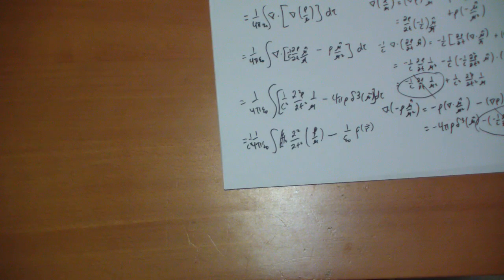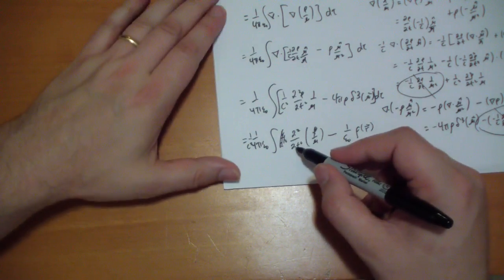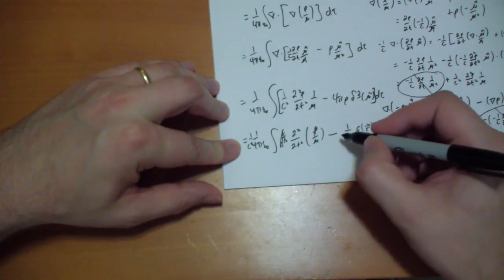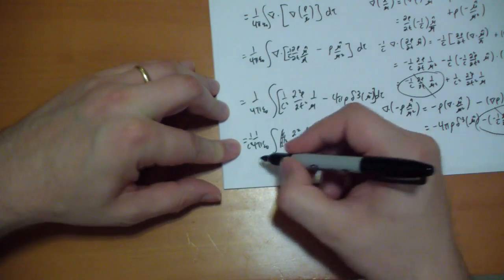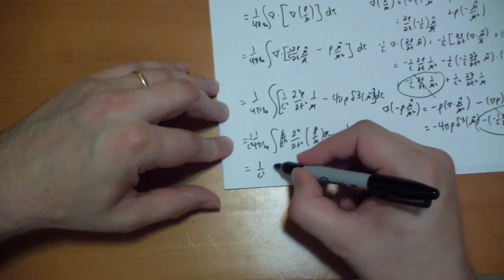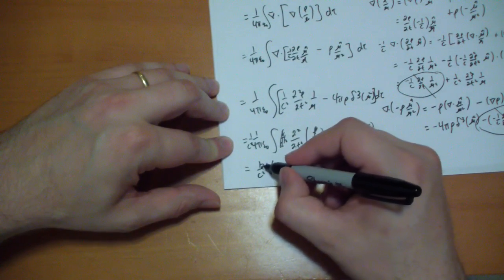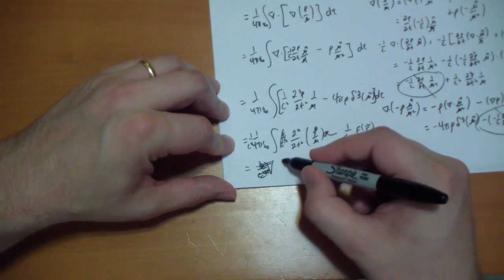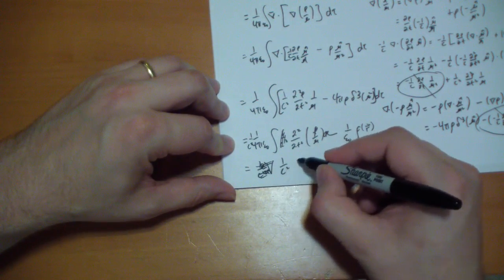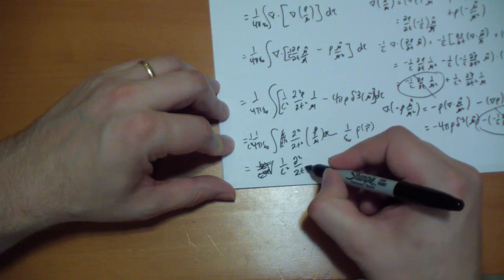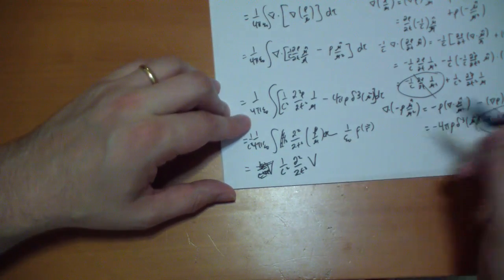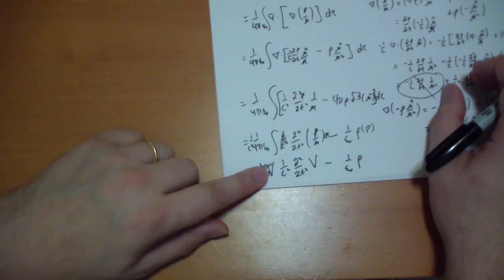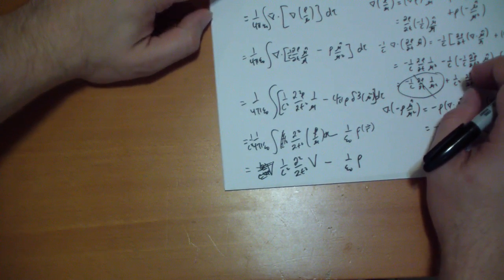Because remember how the Dirac delta function works inside an integral — it picks out that one value, so it picks out ρ at the r-vector position. So the Laplacian of V equals 1/c² times the second time derivative of V, minus 1/ε₀ times ρ, which is exactly what it should equal.